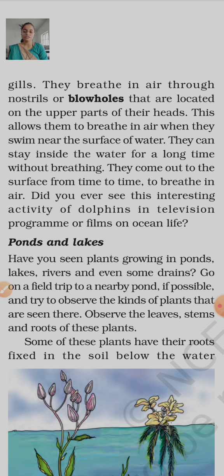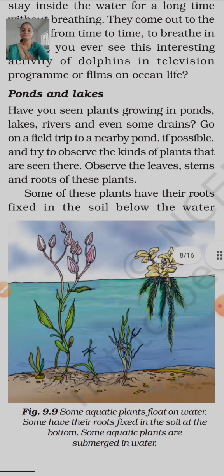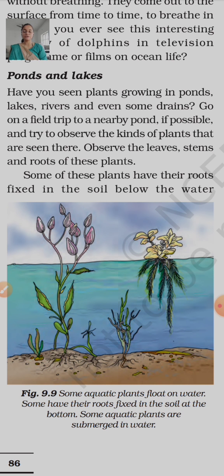Have you seen plants growing in ponds, lakes, rivers and even some drains? On a field trip to a nearby pond, if possible, try to observe the kinds of plants that are seen there. For example, if you live in Ajmer, you can go to Anasagar and observe the green plants growing in or near the water.